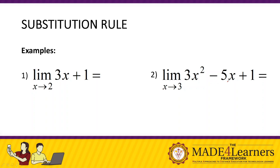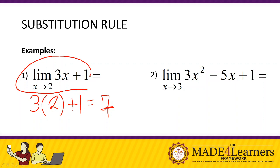Let's try some examples. We have the limit of 3x + 1 as x approaches 2. Instead of creating a table of values, we can use substitution. So we have 3 times 2 plus 1, which gives us 6 + 1 = 7. If you remember, this was our example from the prior lesson, Lesson 1.